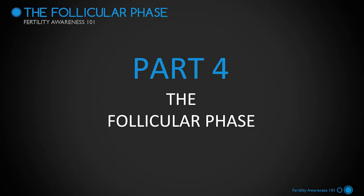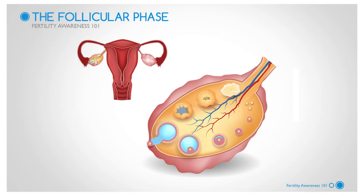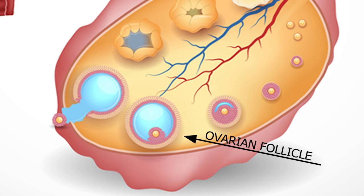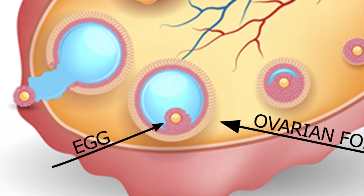Now we are going to discuss the follicular phase. During the entire follicular phase, a follicle-stimulating hormone called FSH is secreted. When FSH reaches a certain level, five to seven ovarian follicles will be recruited and begin competing to reach ovulation. An ovarian follicle is a fluid-filled sac in the ovary which contains an immature egg.